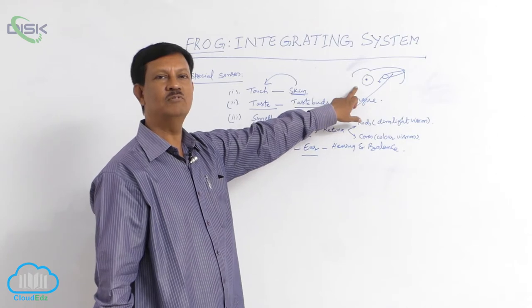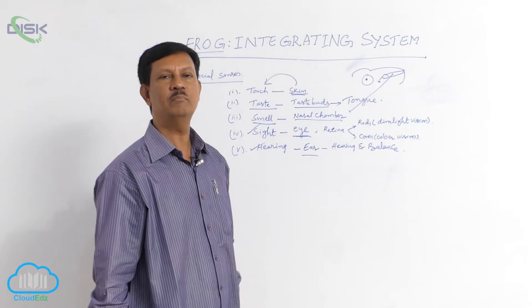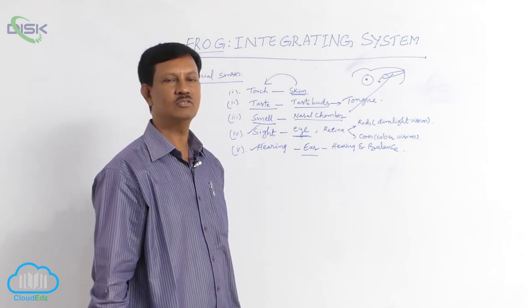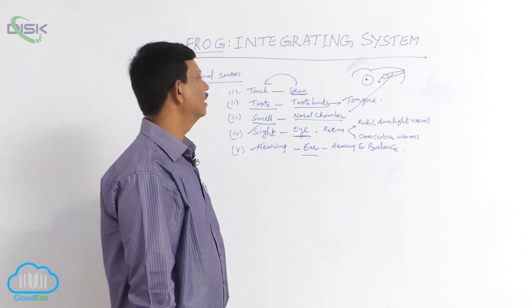The upper eyelid is movable, the lower is not movable, and a transparent nictitating membrane is also present. When the frog is in water, the nictitating membrane gives protection to the eye.